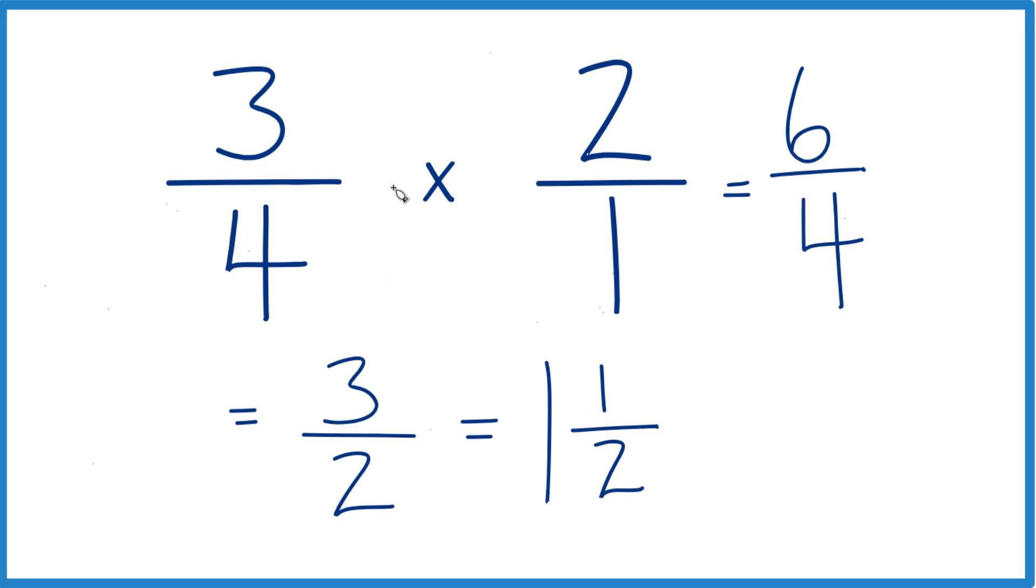So 3 fourths divided by 1 half gives you 1 and 1 half. That's the mixed number. This is Dr. B. Thanks for watching.